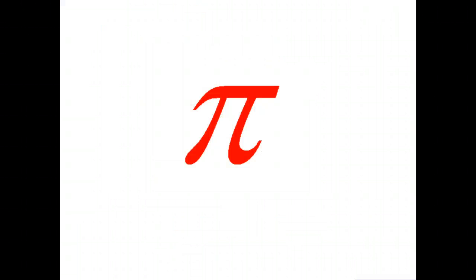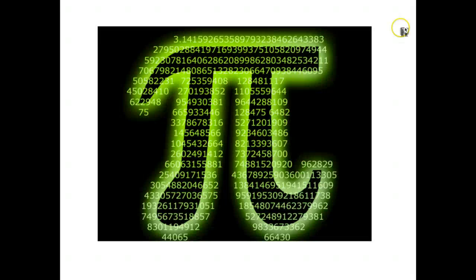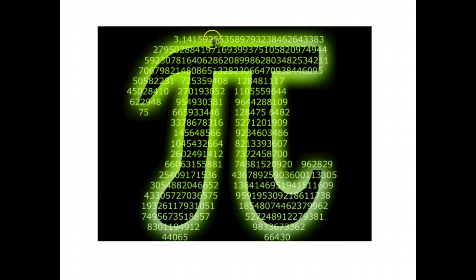Another example is pi. If you try to write out pi as a decimal you get 3.1415926 etc. It doesn't terminate, and if you look at the digits of pi you can't see a pattern to it. So the square root of 2 and pi are probably the two most commonly known irrational numbers.